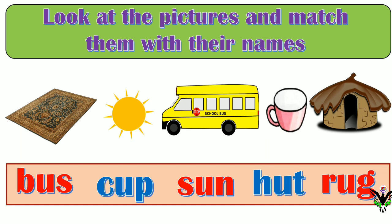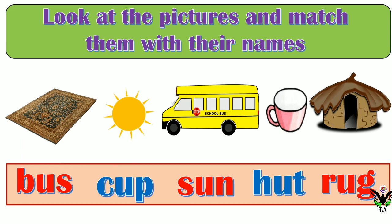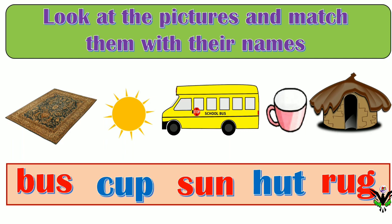Look at the pictures and match them with their names. Chitra ani shabd yancha zhodya lawai chet. First picture: rug — R-U-G, rug. Second picture: sun — S-U-N, sun. Third picture: bus — B-U-S, bus. Fourth picture: cup — C-U-P, cup. Fifth picture: hut — H-U-T, hut. Match the pairs in your book.